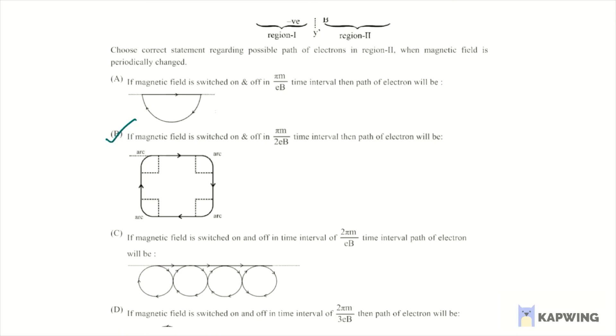So if we calculate this distance, then this distance can be written as velocity times this time period, capital T. And this value comes up to velocity is E by B, and time period is 2π m divided by EB is velocity.